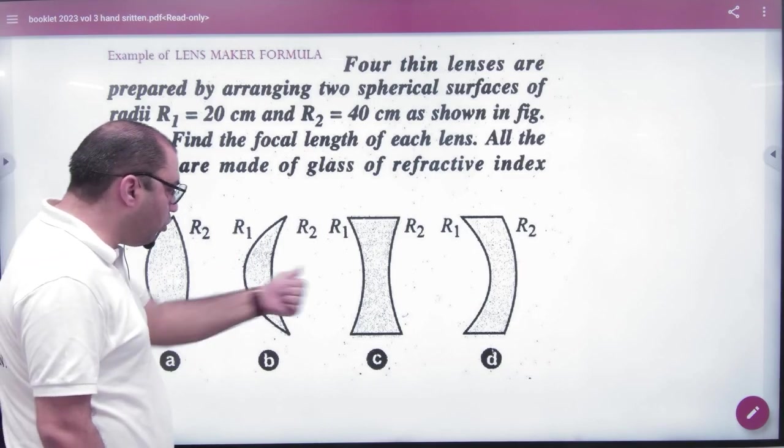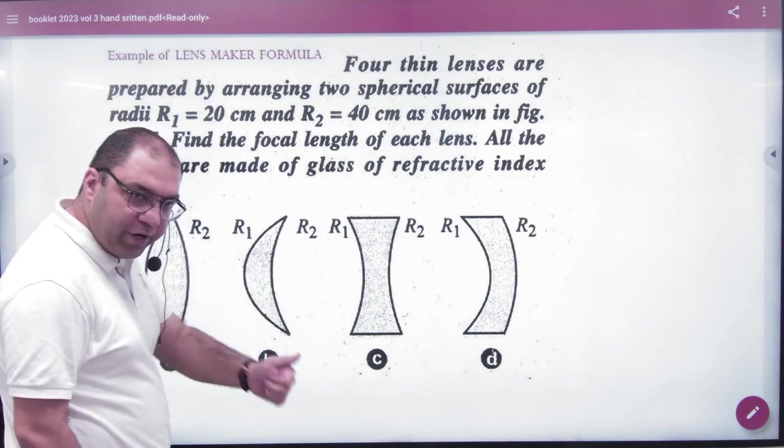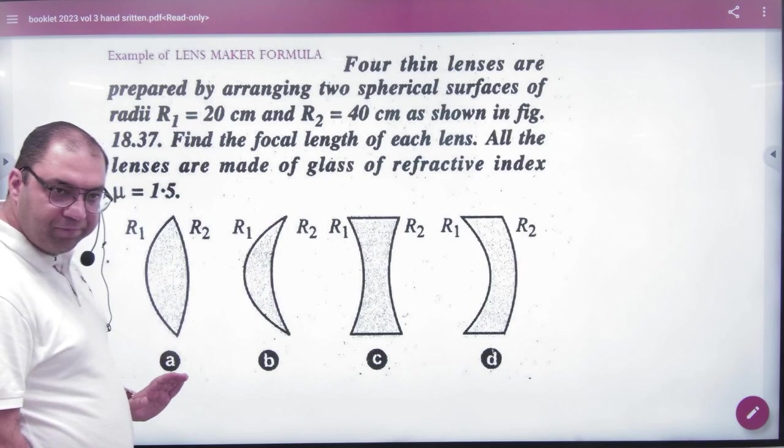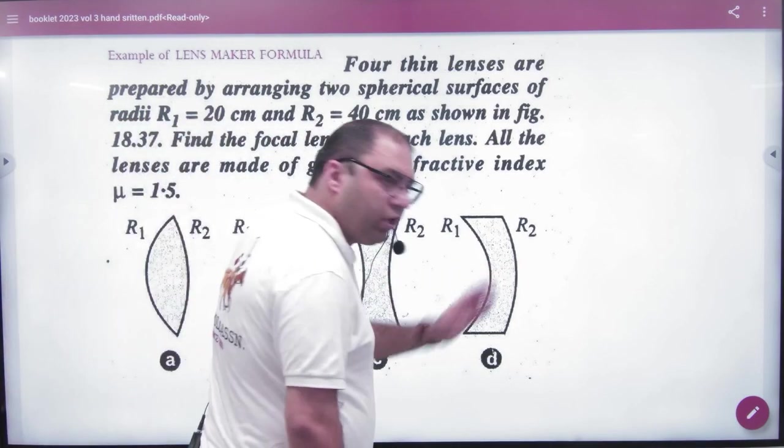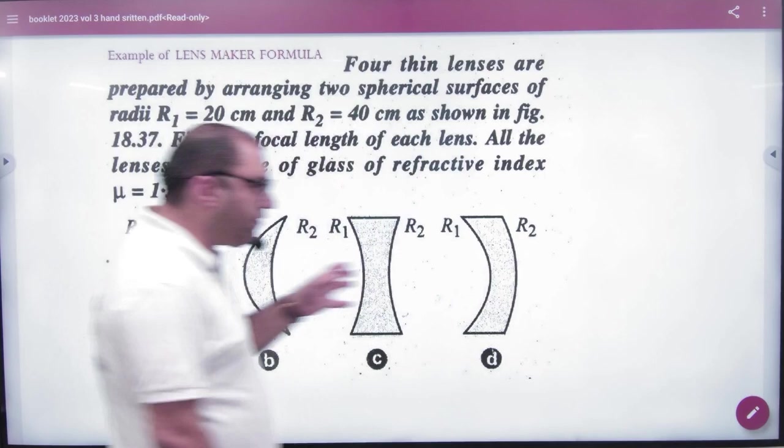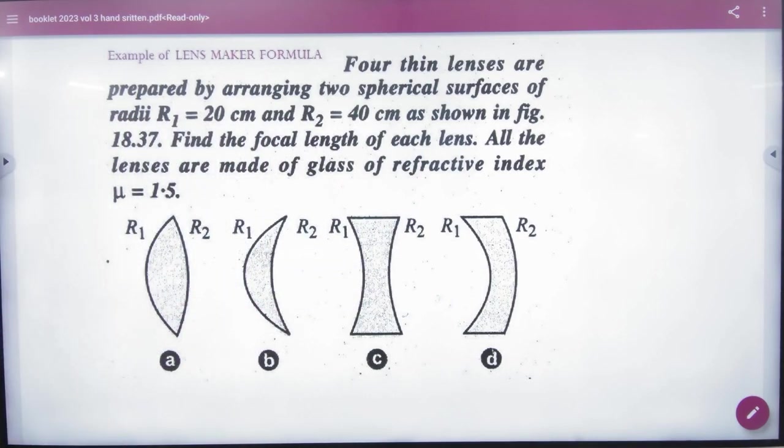In this, both R1 and R2 will be positive because both centers will be on the right. In this, one R1 will be negative and one R2 will be positive. And in this, both R1 and R2 will be negative. So there will be 4 questions where we will change signs.